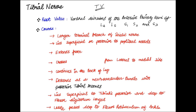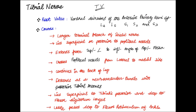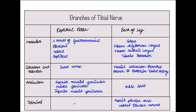The tibial nerve extends from the superior angle to the inferior angle of the popliteal fossa, crosses the popliteal vessels from the lateral to the medial side, then continues in the back of the leg, and lastly passes deep to the flexor retinoculum of the ankle.